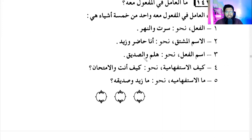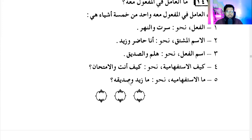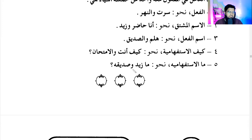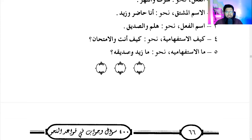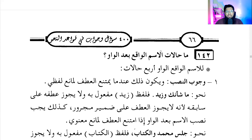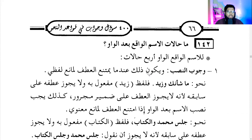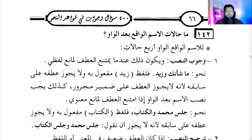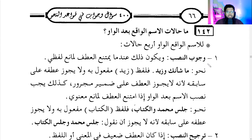'You come and your friend' — that means with your friend. 'How are you in the exam?' meaning how are you with the exam. 'What is Zaid and his friend?' — what is the situation? What are the situations of the noun after waw? There are four situations. One is: it should be mandatorily mansub, and this happens when it cannot be atf — there is no possible conjunction.